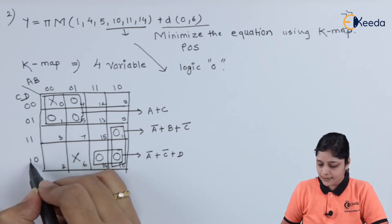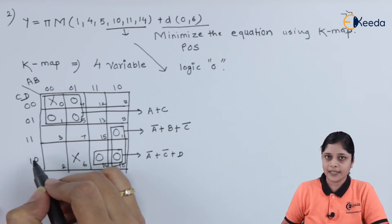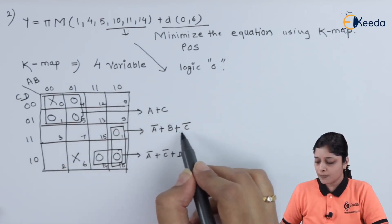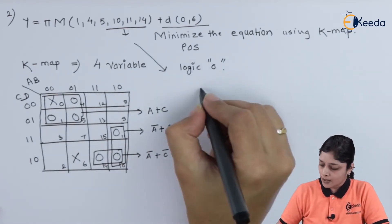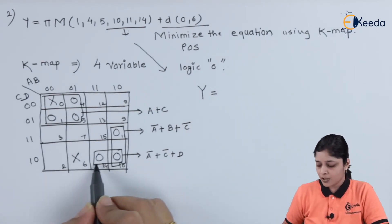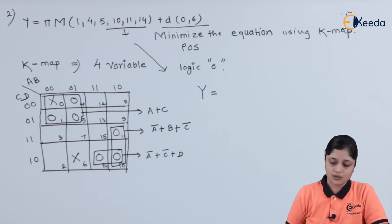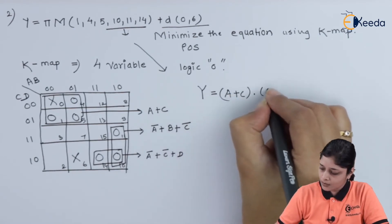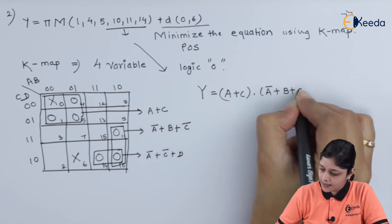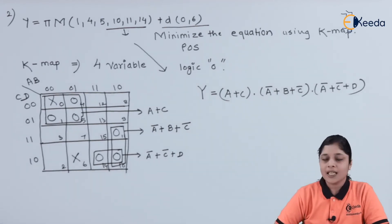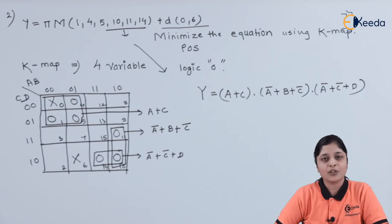The last zero is covered with a group of 2. Here c is 1 and d is changing, so d is not considered. Considering only a, b, and c, the equation is a-bar plus b plus c-bar. Here we have not used don't care conditions, because zeros are already present and we concentrate on those zeros. So finally your answer is Y equal to (a plus c) dot (a-bar plus b plus c-bar) dot (a-bar plus c-bar plus d).